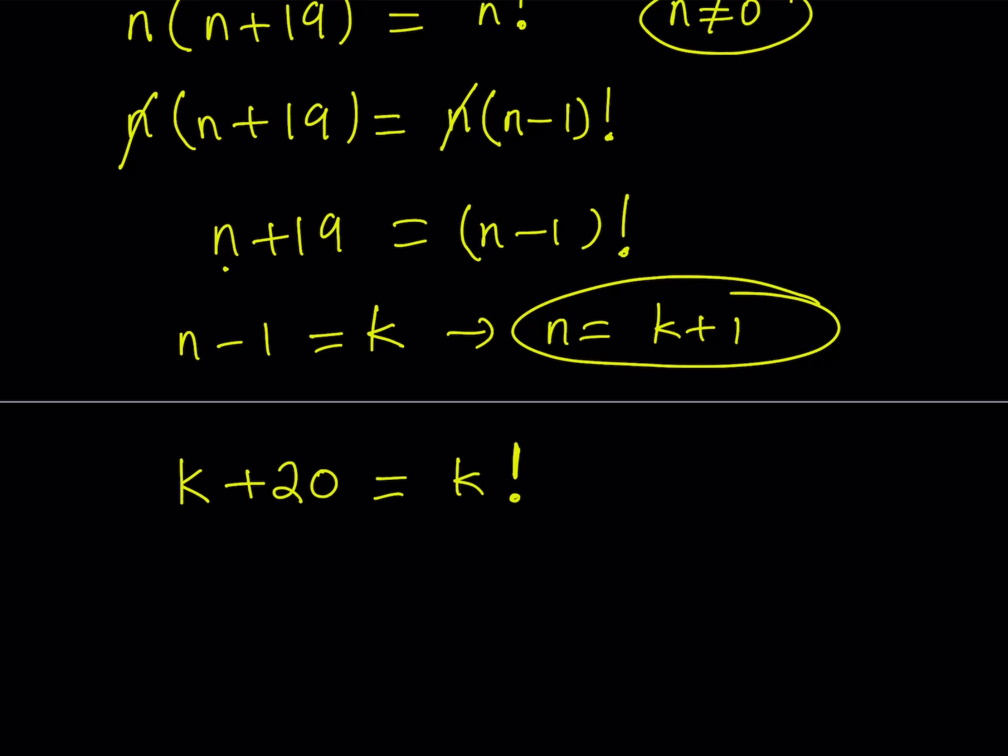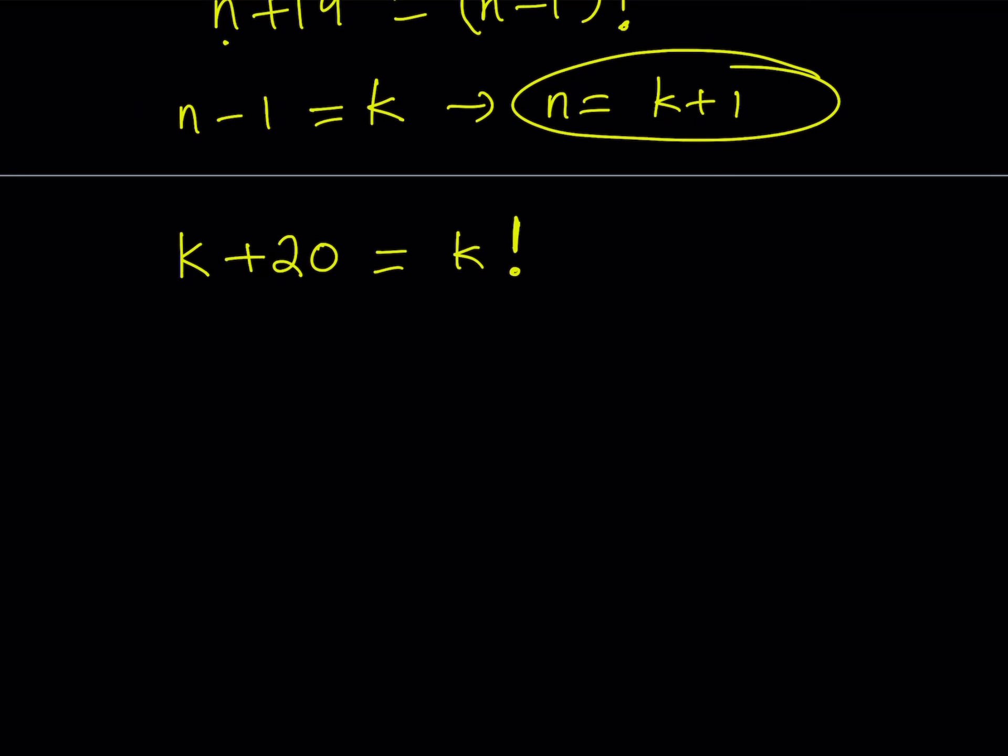Can you graph factorials? Yes, but they're just going to be dots. They're not connected. You can define it for real numbers, for negatives and so forth, but here we're looking for a non-negative integer. So we have to make sure it is an integer. And the only solution, if k is an integer, is k equals 4.